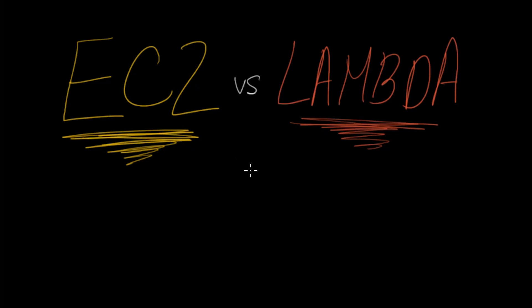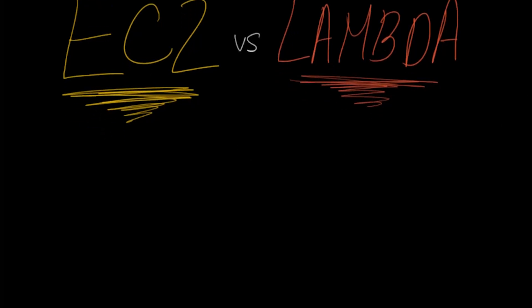The first thing I want to talk about is a brief introduction of what EC2 and Lambda are and how they work. Let me start by talking about EC2. EC2 stands for Elastic Cloud Compute. You can see here it has two Cs - that's where the C2 comes from, Cloud Compute.